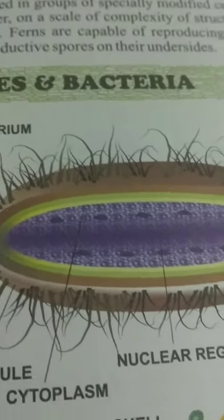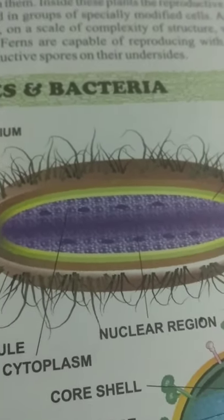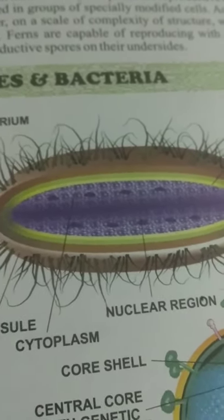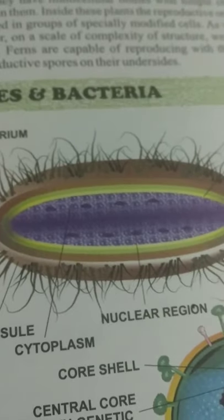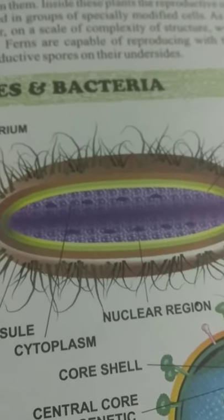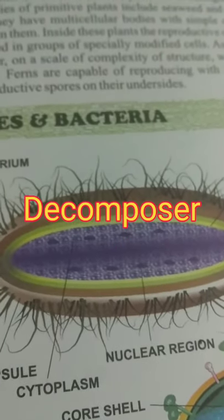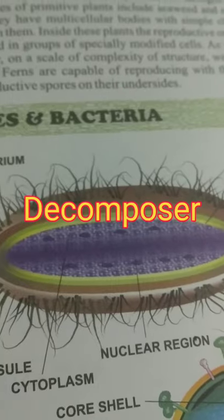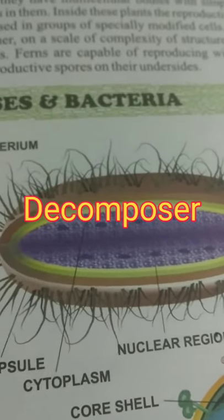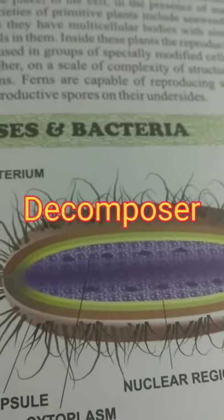Some animals eat both plants and animals — such animals are called omnivores. Some microorganisms like bacteria and fungi decompose organic matter, increasing soil fertility. These are the decomposers, which recycle nutrients in the environment.